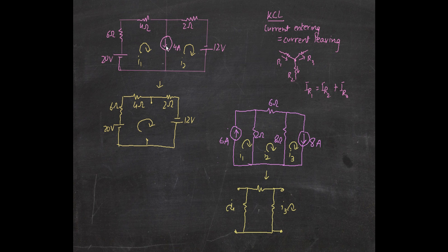Whenever you want to remove a current source, what you do is you always do an open circuit. And when you have to remove a voltage source, you do a short circuit — you just draw a wire over it. So the first step is we draw the original circuit and then just do an open circuit here, so the current source is removed, and then you apply Kirchhoff's voltage law.